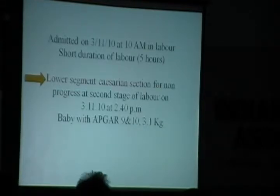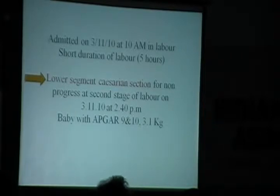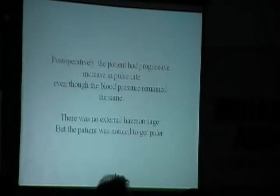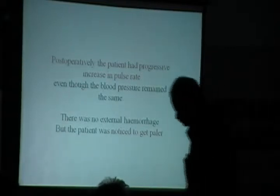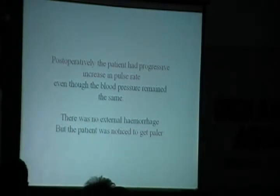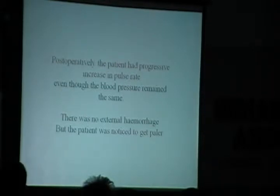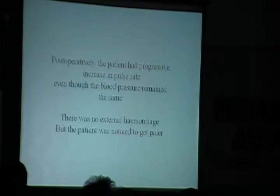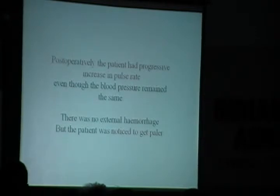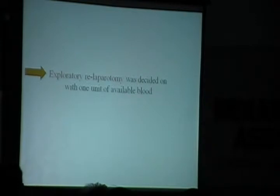The cesarean section was done by one of the resident doctors. Post-operatively, for three hours, the BP was around 100/60 and pulse rate around 90–92. Then the pulse rate progressively increased. Even though the blood pressure almost remained the same, normally whenever there is tachycardia or low BP we think of postpartum hemorrhage. But in this case there was no visible bleeding. The pulse rate went from 90 up to 130, then BP started coming down to 80/60. The operating surgeon called me and by the time I arrived, BP was 50/30 and pulse rate around 140.